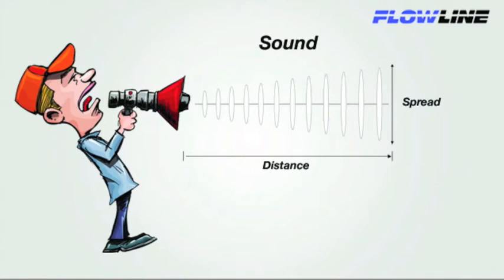First, I would like to talk about some important properties of sound. Sound travels from a source, and it's focused in a certain direction. And as sound travels over distance, the waves spread out from their source in a conical shape.